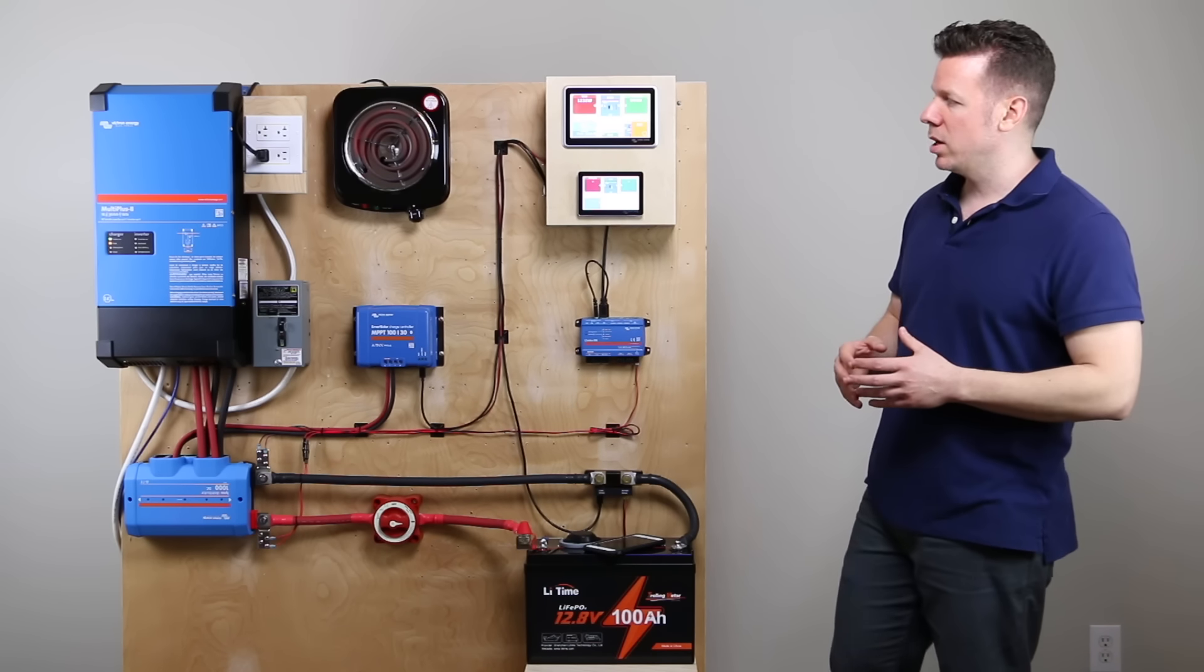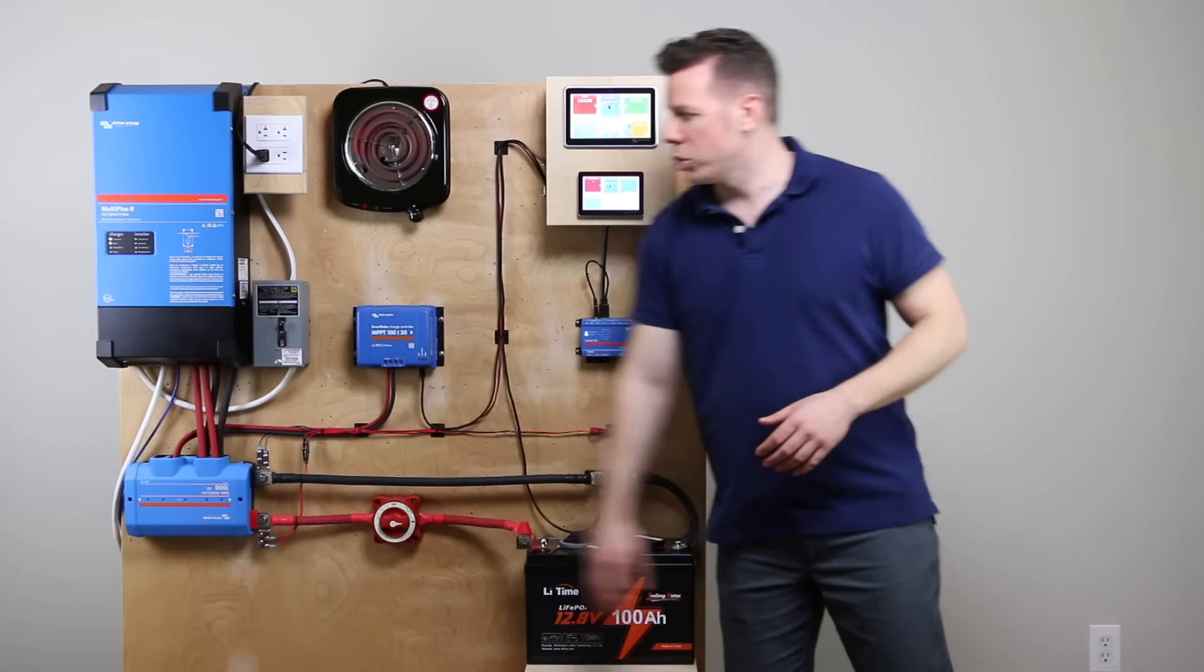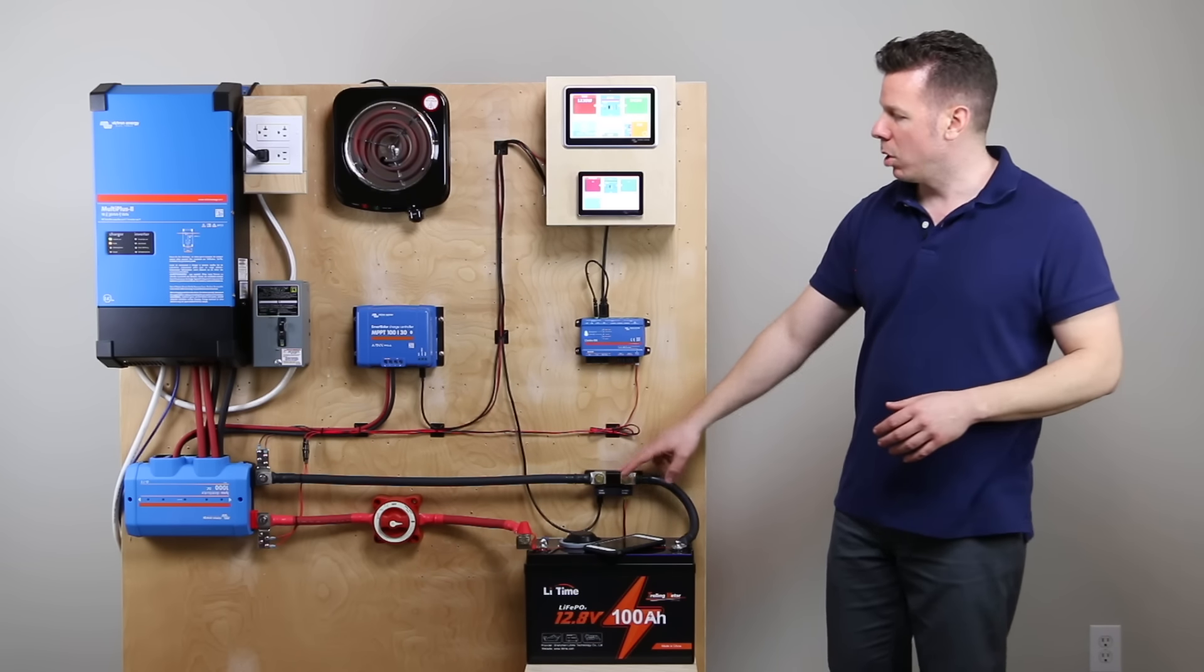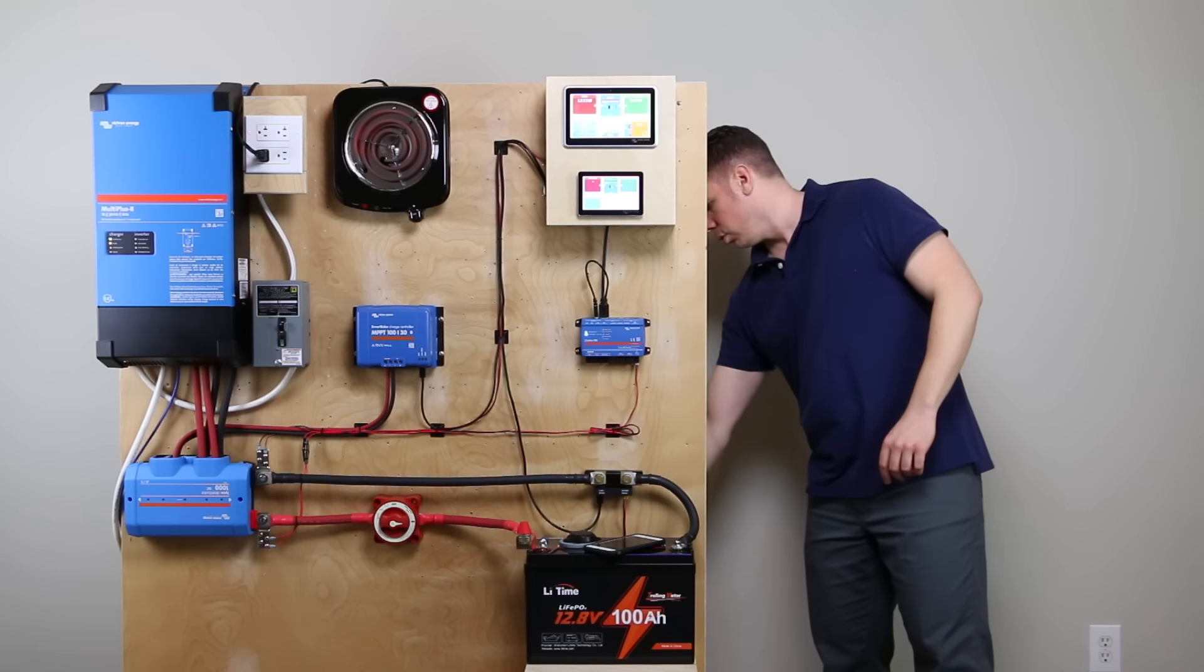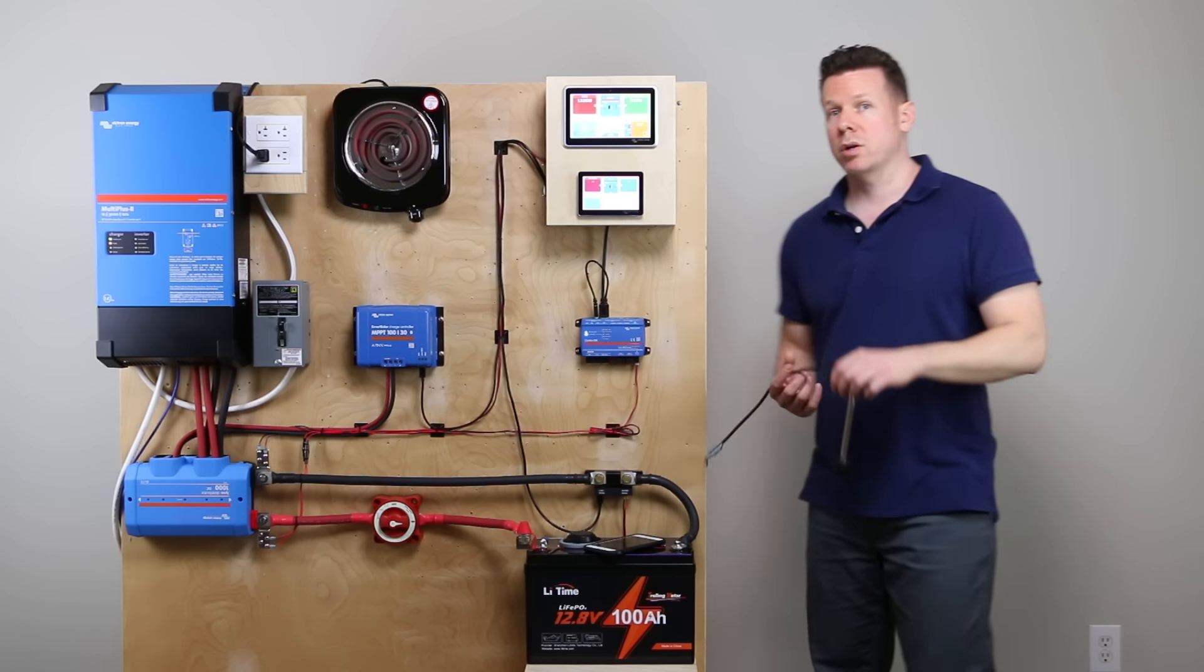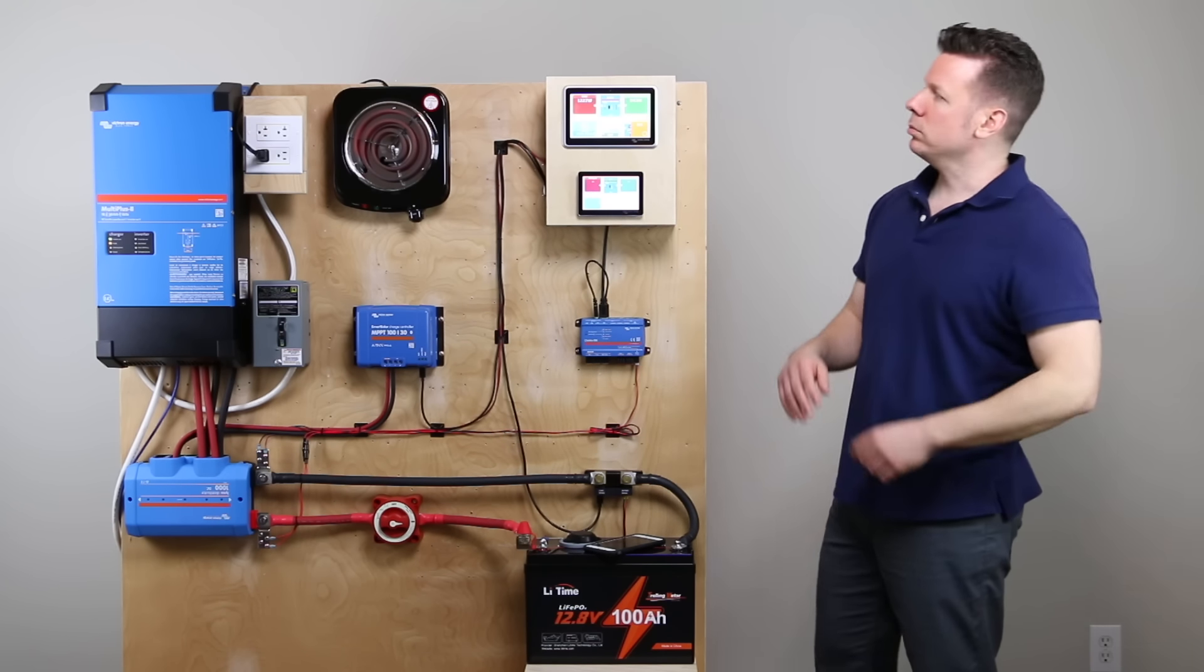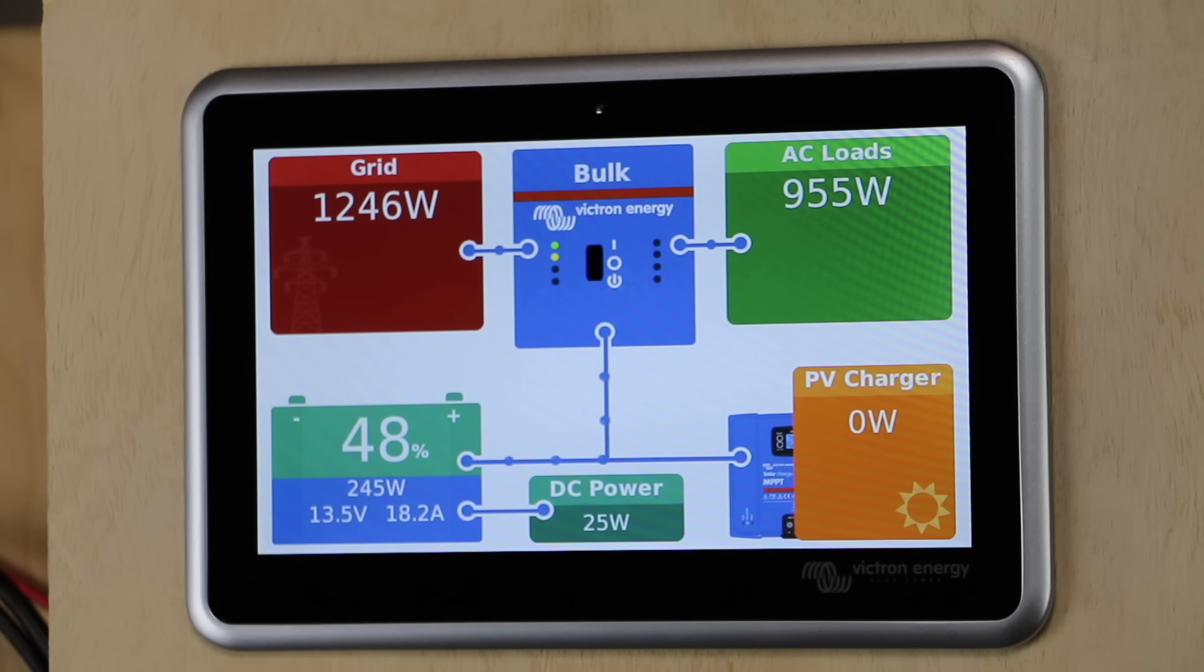I have a sample system set up here. You can see I have a solar charge controller, a multi-plus inverter charger, a smart shunt battery monitor, and I also have a little water tank sender. This is a resistive tank sender. These are all plugged into the Ekrono GX, and you can take a look. We are currently plugged into the power grid, and our little stove is on. That's our AC load.